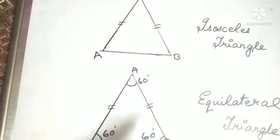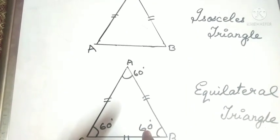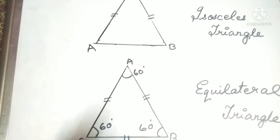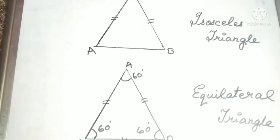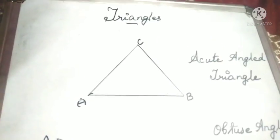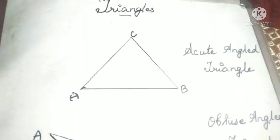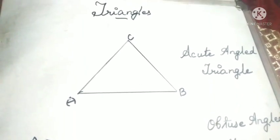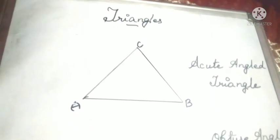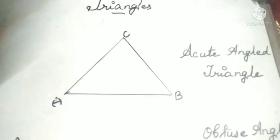Now we are going to learn the classification of triangles based on the measure of their angles. First, we are going to learn what is an acute angled triangle.